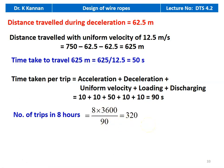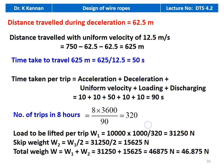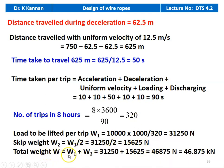In 320 trips the total load lifted is 10,000 kilonewton, so load lifted per trip equals 10,000 into 1000 divided by 320 equal to 31,250 newton. Skip weight W2 equal to W1 divided by 2 equal to 31,250 divided by 2 equal to 15,625 newton. Total weight W equal to W1 plus W2 equal to 31,250 plus 15,625 equal to 46,875 newton, which is 46.875 kilonewton.